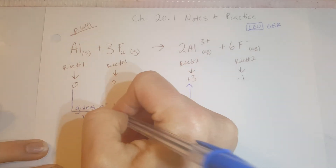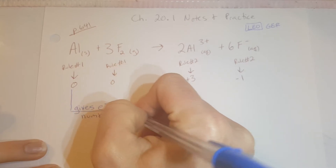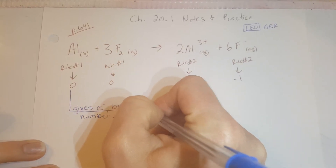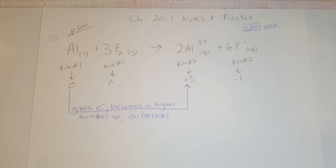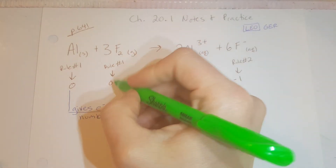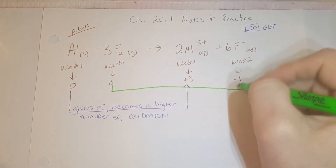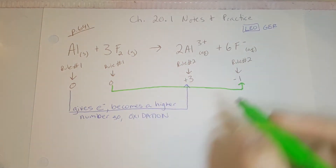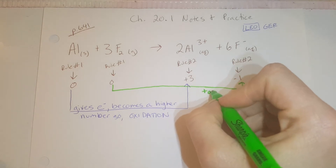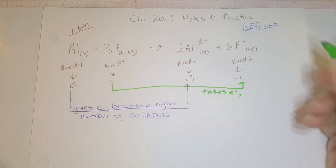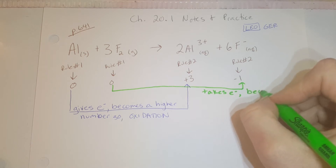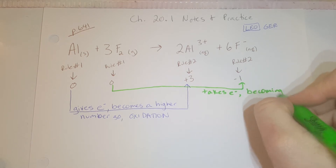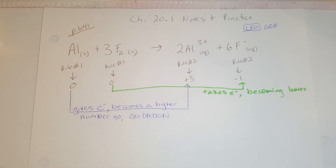Aluminum goes from zero to positive three, so that's oxidation. Then looking at fluorine, it goes from zero to negative one, meaning it's taking an electron and becoming a lower number. A lower number is reducing its value, so that's reduction.